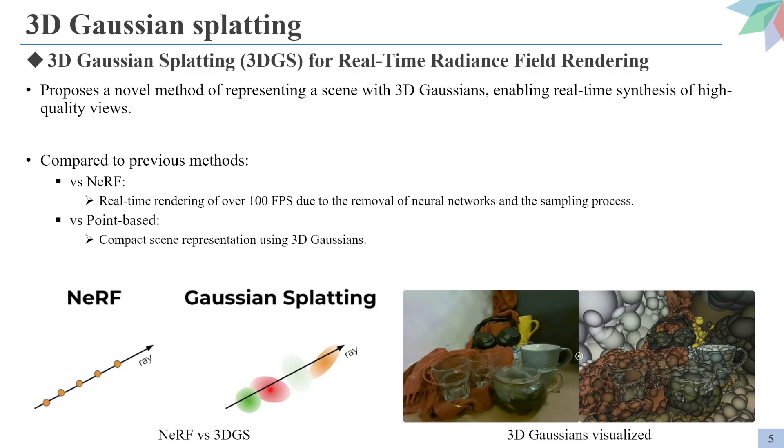In today's paper, 3D Gaussian Splatting managed to address these problems by representing the scene using 3D Gaussians, which enabled real-time synthesis of high-quality views. The advantages it holds over the NeRF model is that it does not require neural networks nor the sampling process. And the removal of these two factors allowed the model to present frame rates of over 100 FPS. And it can also better represent the scene compared to point clouds, as can be confirmed in the bottom right image. We can see the 3D Gaussians forming the 3D space, which is way more compact than the point clouds.